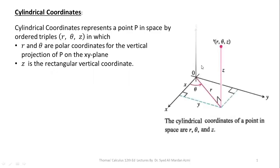Cylindrical coordinate represents a point P in space by the ordered triples R, theta, and Z, in which R and theta are polar coordinates for the vertical projection of P on the x-y plane. Z is the rectangular vertical coordinate.